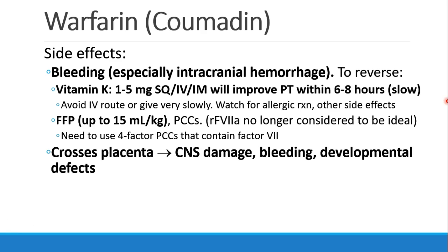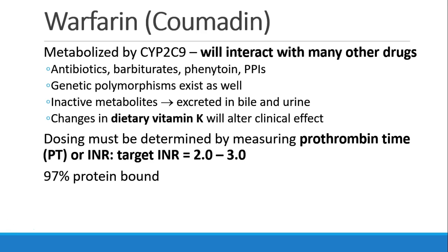Warfarin crosses the placenta and can damage the fetus through damage to the CNS, bleeding, and developmental defects, so we don't use warfarin in patients who are pregnant or at risk of becoming pregnant. It is metabolized by cytochrome P450 subtype 2C9, and that interacts with many other drugs. Any of these drugs that are given could change your Coumadin levels. Even changes in dietary vitamin K content will alter the clinical effect of warfarin. Patients have to be dosed and then their blood taken to measure their PT, their prothrombin time, or their INR. Usually the target INR is between 2 and 3. Warfarin is 97% protein bound.